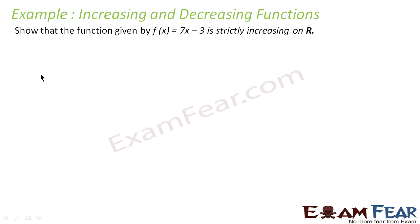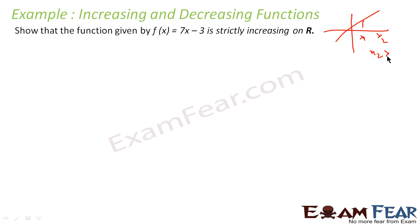Let's take an example. We have to show that the function f(x) = 7x - 3 is strictly increasing on R. The rule we have is: if the function is strictly increasing and you take any two points x1 and x2 where x2 is greater than x1, then f(x2) has to be greater than f(x1). If this is true, the function is strictly increasing.